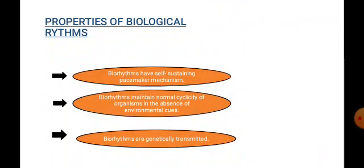The second property is that biorhythms maintain normal cyclicity of our body even in the absence of an environmental cue. This means that without any stimulus, biological rhythm regulates our body functions. However, stimulus is still required to regulate our biological clocks. The third property is that biorhythms are genetically transmitted — they have a genetic basis and are inherited from our parents.